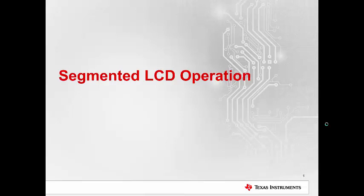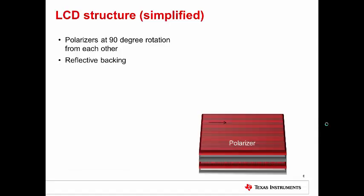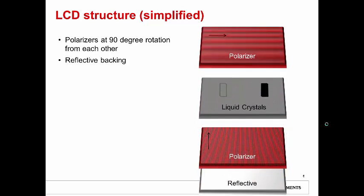The next few slides are going to discuss the basic operation of segmented LCDs, how they work. This slide shows a simplified version of the structure of a segmented LCD display. Essentially, it consists of two polarizers rotated 90 degrees from each other. These polarize light coming into the display, and then there's a reflective backing which will reflect light that gets through. In between the polarizer layers, there are liquid crystals with electrodes to apply a charge.